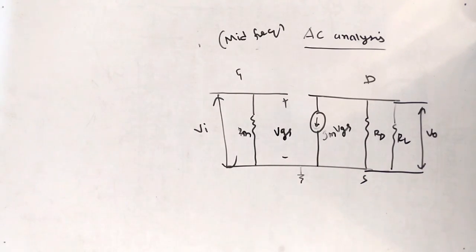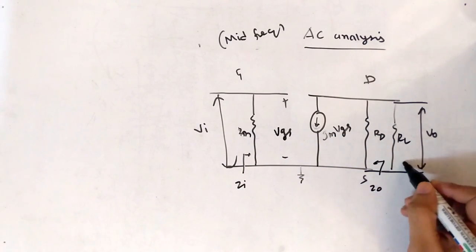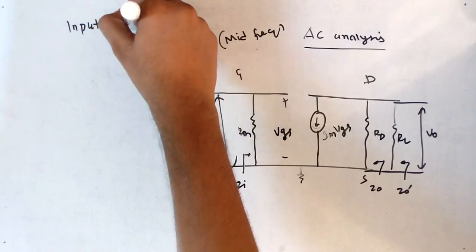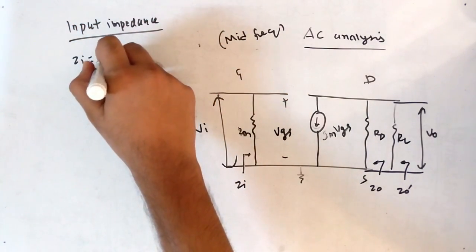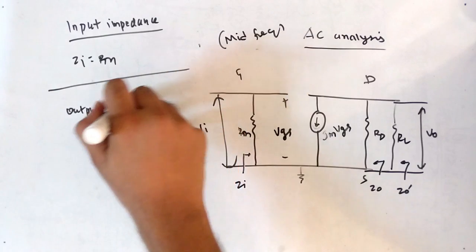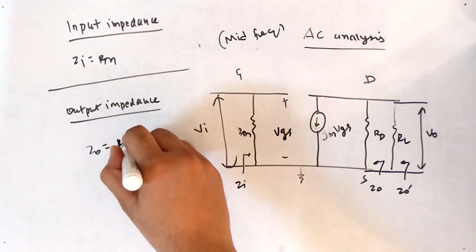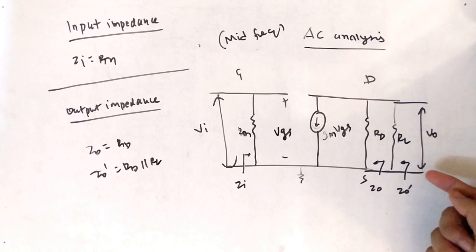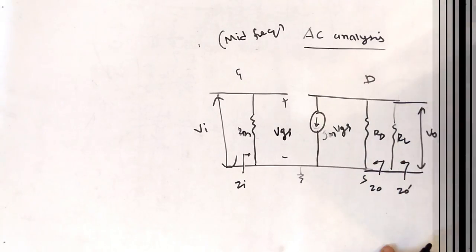Now let's find the circuit parameters. Input impedance ZI equals RTH. Output impedance ZO equals RD. ZO' (looking from the output including the load) equals RD parallel RL.